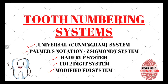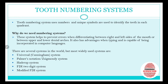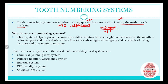In tooth numbering systems, numbers starting from 1 to 32, along with alphabets and some unique symbols, are used to identify the teeth in each quadrant. You know that there are four quadrants — first, second, third, and fourth — and there are teeth in these quadrants. To identify these teeth in each quadrant, we use the tooth numbering system.